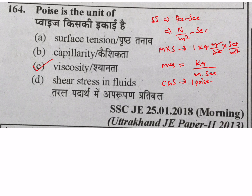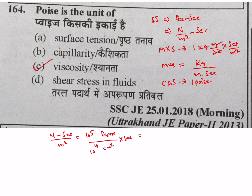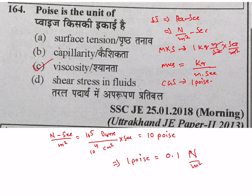The CGS unit is poise. The poise to Pascal-second conversion is important: 1 Pascal-second equals newton per meter square into second. Since 1 newton equals 10 to the power 5 dyne, and 1 meter square equals 10 to the power 4 centimeter square, you get 10 poise. Therefore, 1 poise equals 0.1 newton per meter square into second, or 0.1 Pascal-second.